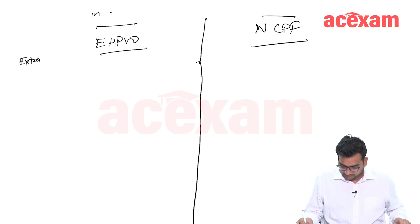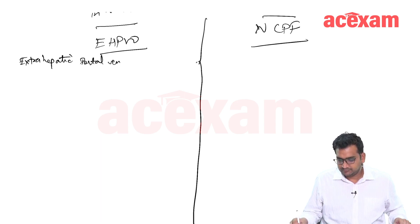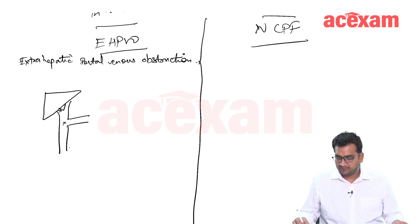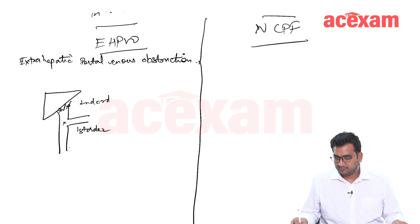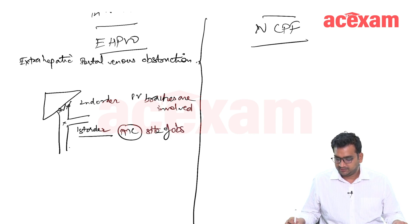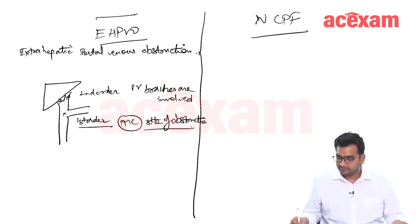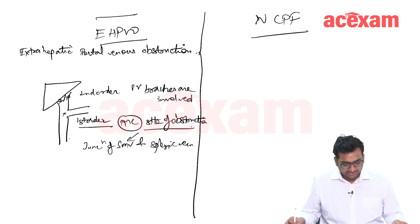EHPVO stands for extrahepatic portal venous obstruction. In this condition, there is involvement of the first and second order branches of the portal vein. The most common site of obstruction is the junction of the superior mesenteric vein (SMV) and the splenic vein.